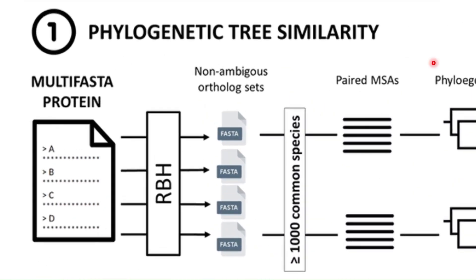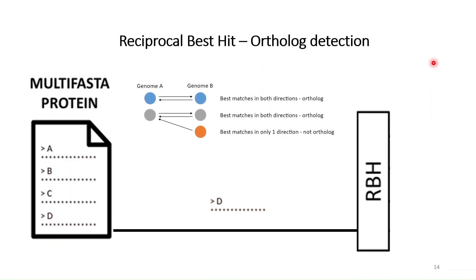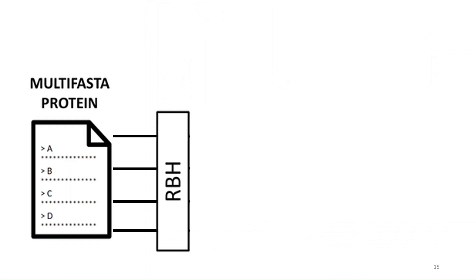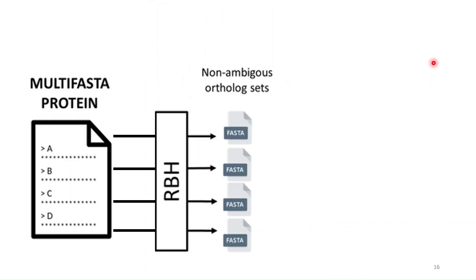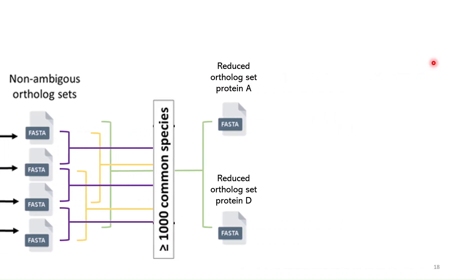So the first step would be the comparison of phylogenetic trees. Essentially you feed the program with a number of proteins and for each of the proteins we will perform an ortholog search. In order to do this we will do the reciprocal best hit approach. The idea is that for each of the proteins we will end up with an ortholog set, and then because we are looking for binary interactions we are going to make all possible pairs of these ortholog sets. For further analysis we will only keep those pairs of proteins that share orthologs in at least a thousand common species.